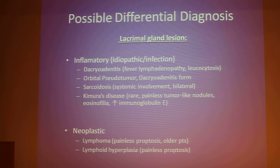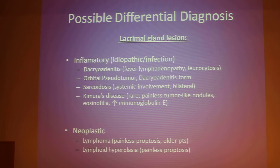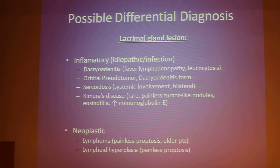Lymphoma is the most common cause of painless proptosis and is more common in adults after age 50. Lymphoma can be very difficult to distinguish from pseudotumor, but DWI is an MRI technique that has recently been proven effective in distinguishing these two entities. Based on the radiological findings, particularly the ADC and DWI, the most probable diagnosis is orbital pseudotumor — confirmed by the audience as well.